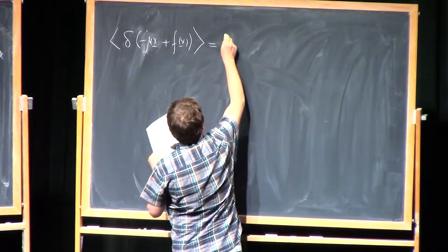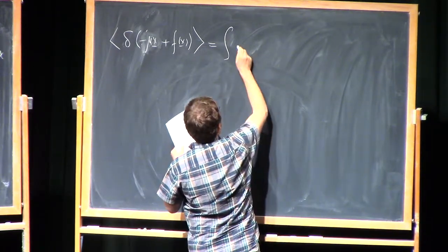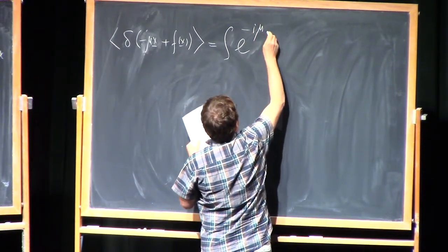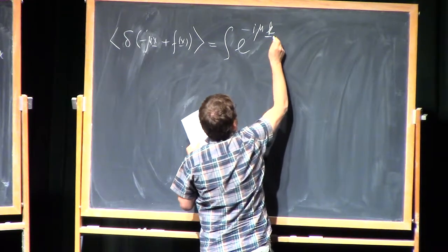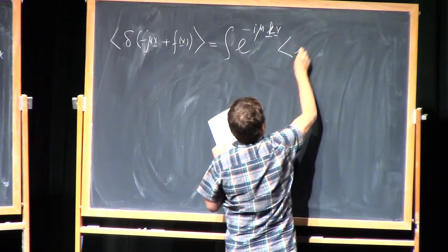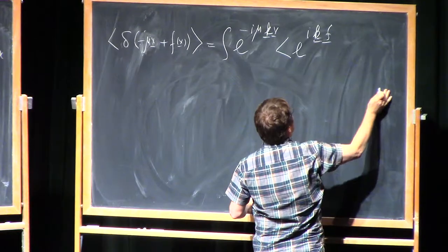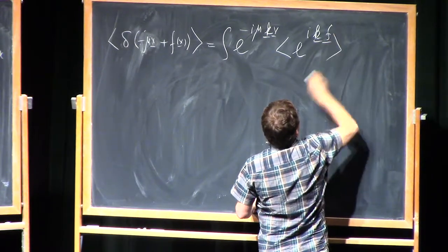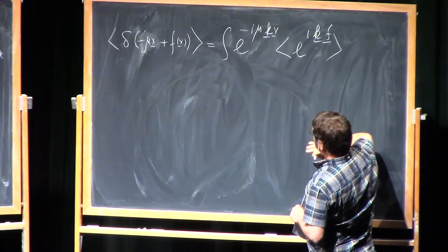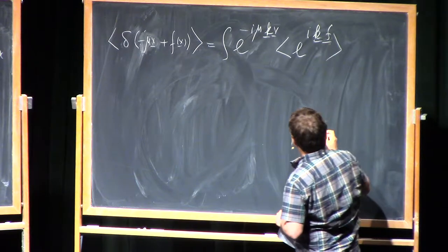I always prefer to average these things using Fourier representation for the delta function. I will write it as i mu times vector k dot x, and this is exponential of i k dot f. This is the object which I need to average, but this is extremely simple since we know that f is a Gaussian variable.